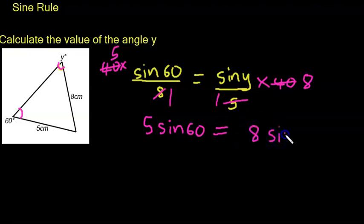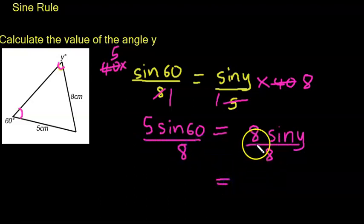We need to find sine y first. So we need to divide both sides by 8. Divide both sides by 8. So the right-hand side, 8 into itself is 1, so the right-hand side will be sine y. And then I get my calculator to calculate 5 sine 60.